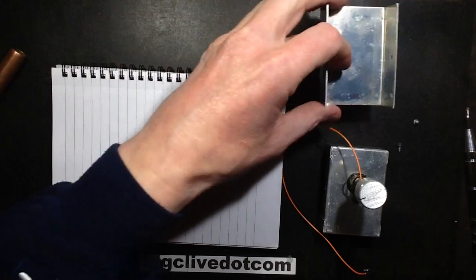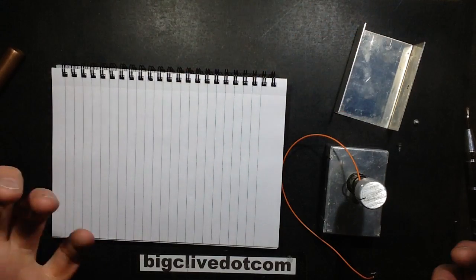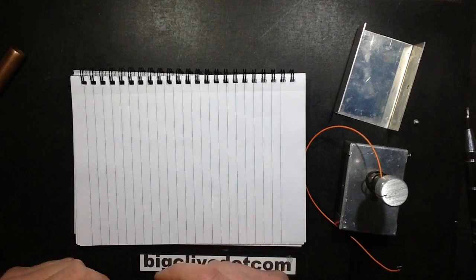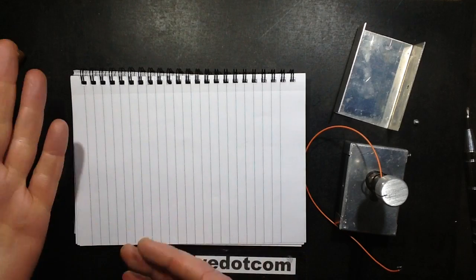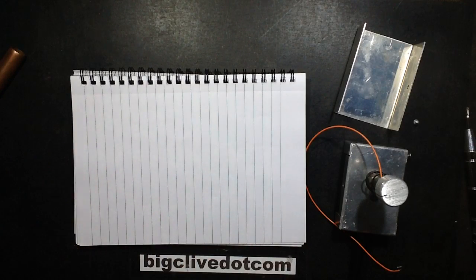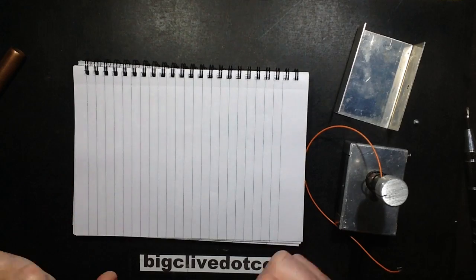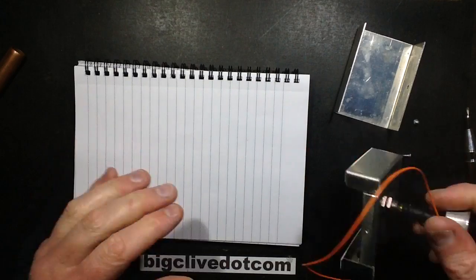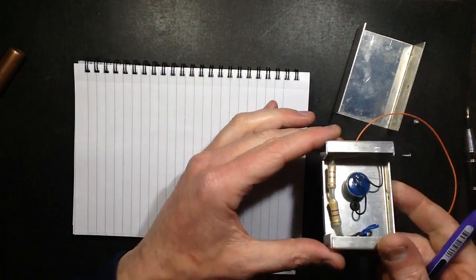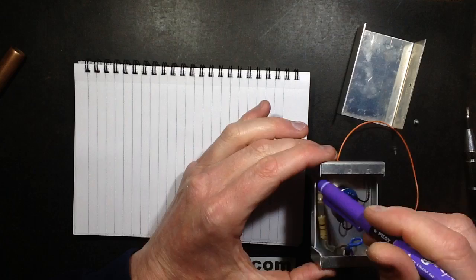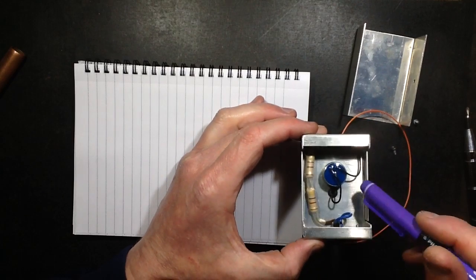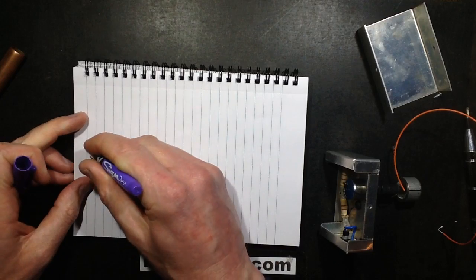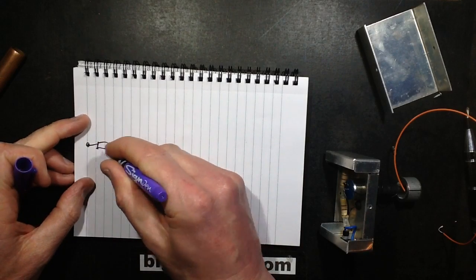Because, you know, you touch something that's not supposed to be live, maybe leakage from somewhere, and it can give you quite a zing. Even capacitively coupled current between cables can give you quite a shock. So this thing here is basically three resistors in series. They're two-watt resistors for their high voltage rating, and then a potentiometer which also has a high power rating.